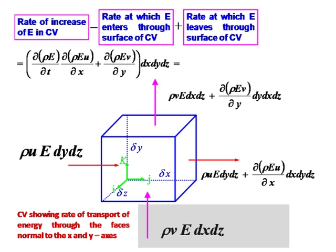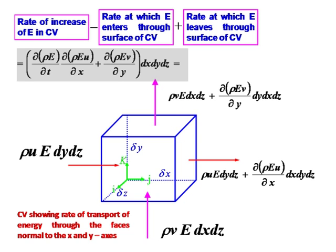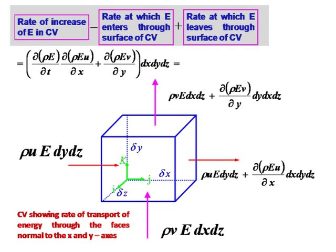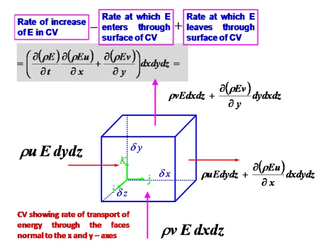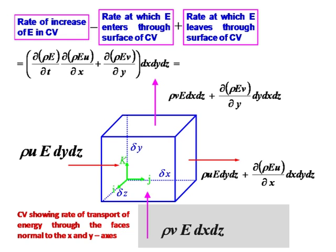Similarly in the y-direction I have ρev·dx·dz and ρev·dx·dz + ∂(ρev)/∂y · dy·dx·dz. There is a sign correction here — the plus sign was missing. The rate of increase of E in the CV is ∂(ρe)/∂t, and after cancellation of in and out terms, I am left with: ∂(ρe)/∂t + ∂(ρeu)/∂x + ∂(ρev)/∂y, times dx·dy·dz.